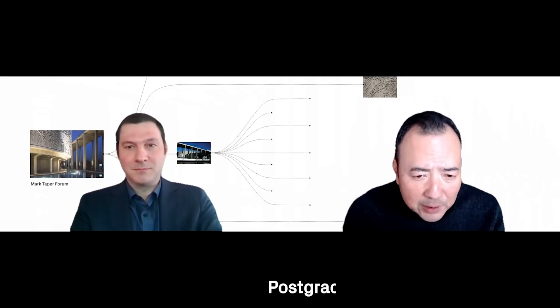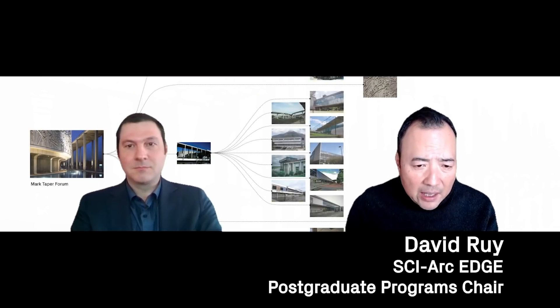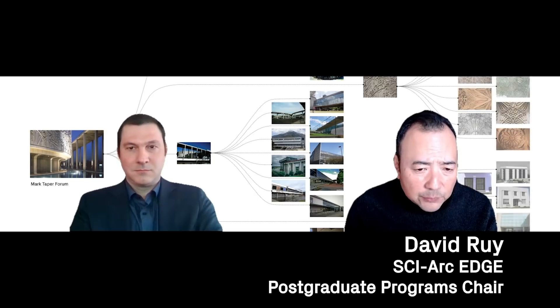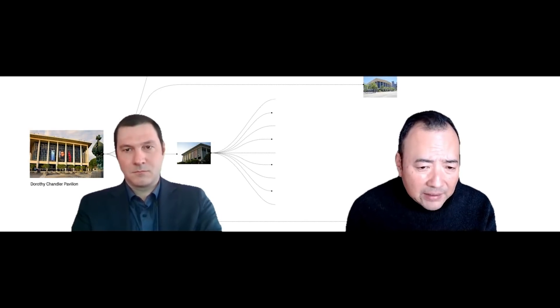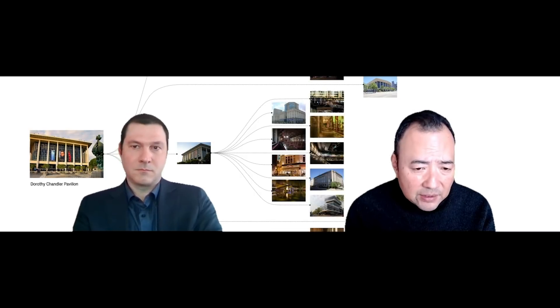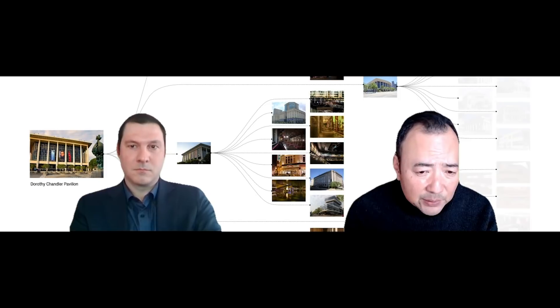I'd like to see if we can begin by bracketing out historical periods in what's often referred to as the digital paradigm in architecture. I'm a graduate of Columbia University during Bernard Chumi's time as dean, when they instituted the now infamous paperless studios. And in retrospect, I see that as a kind of first wave of recent architectural technologies, where we were just trying to figure out how to use a computer.